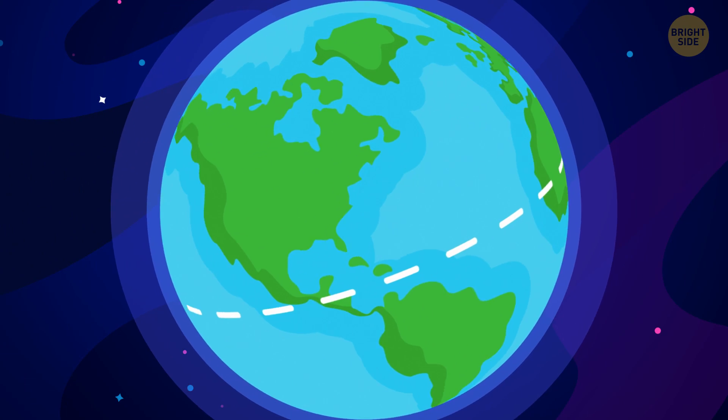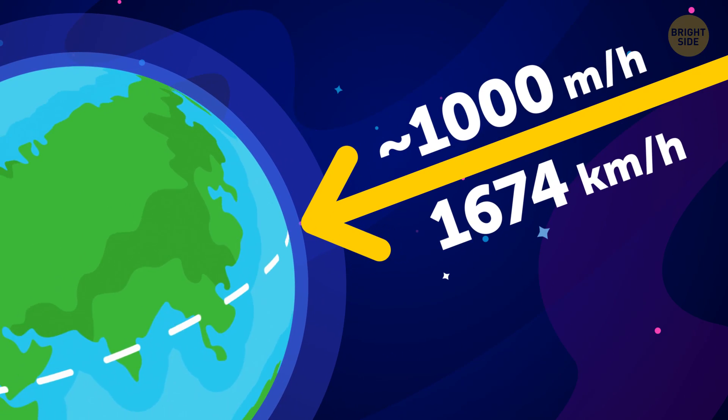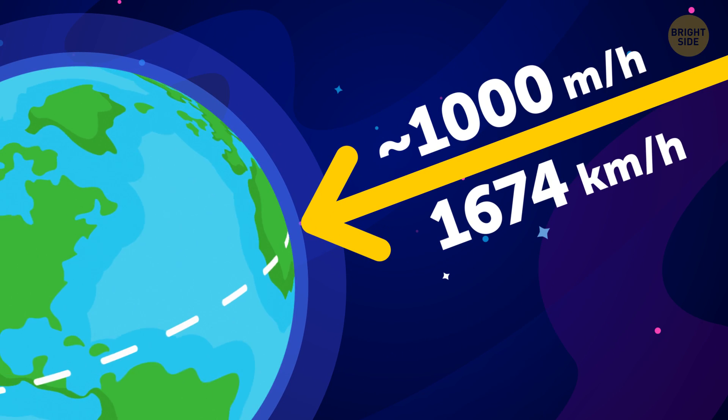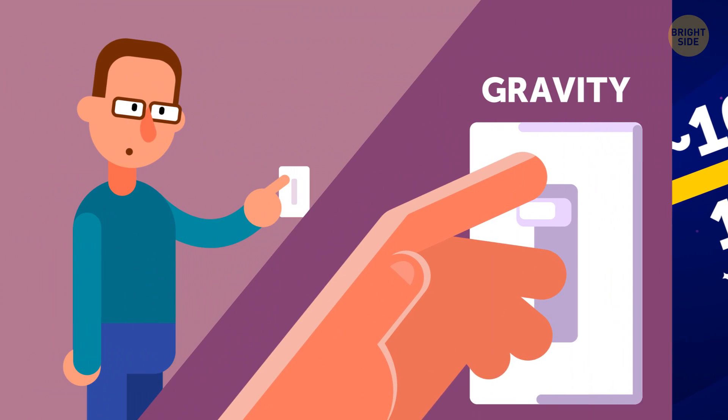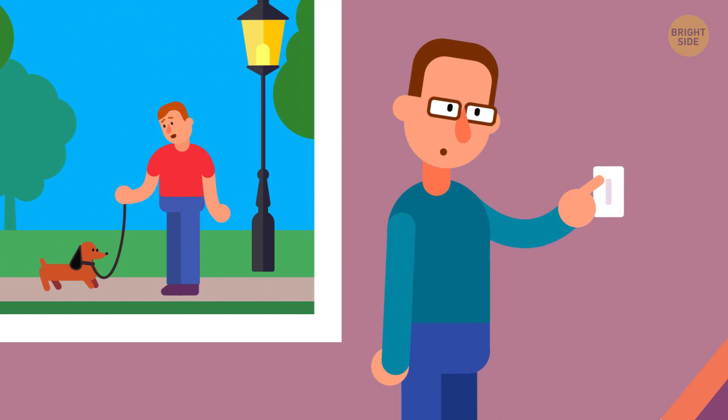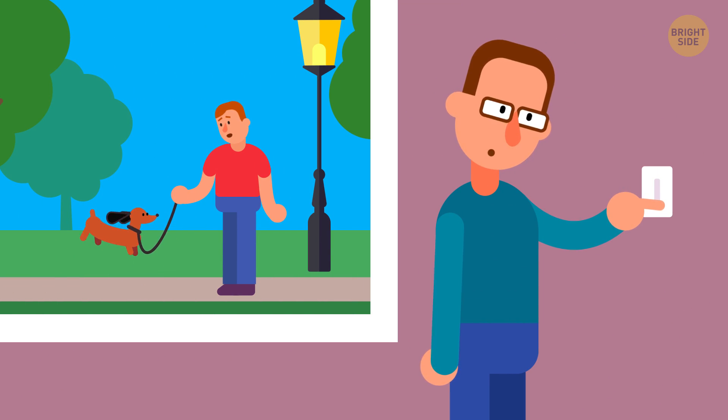As you know, the Earth is spinning around its axis at a velocity of just over a thousand miles per hour at the equator. That's why, if the gravity got switched off, anything unattached to the ground would simply fly off into space.